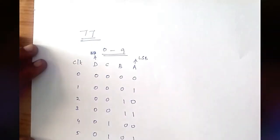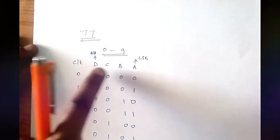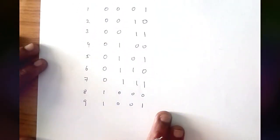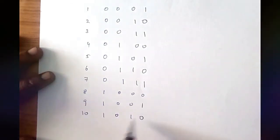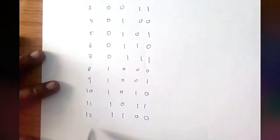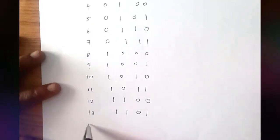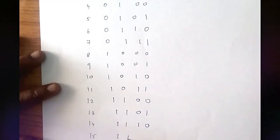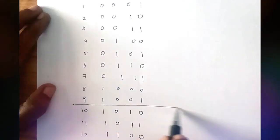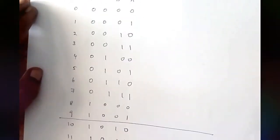From 0 to 9 we have the BCD numbers, but with 4 flip-flops we have 2 power 4 equal to 16 possible combinations. We write all 16 combinations: continuing from 8 as 1000, 9 as 1001, then 1010, 1011, 1100, 1101, 1110, and 1111. We have now written all 16 possible combinations, but we only count up to 0 to 9.